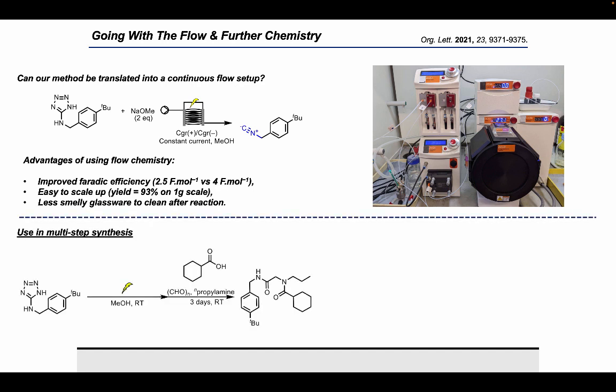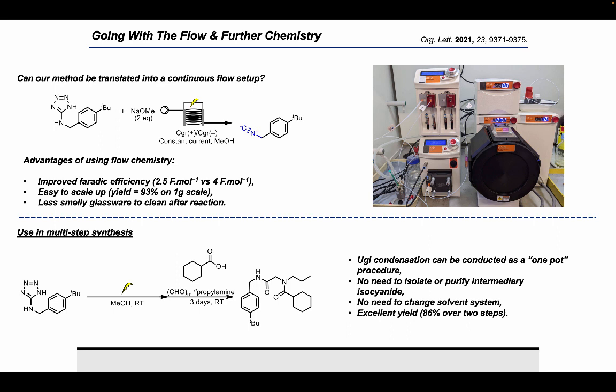We also wanted to demonstrate that our electrochemically synthesized isocyanides could be used in further reactions without purification. And here we actually undertake an Ugi condensation reaction as a one-pot procedure with no need to isolate or purify the intermediary isocyanide and there's no need to change the solvent system. And actually, we're very pleasantly surprised to see a yield of 86% over two steps with no need for purification.